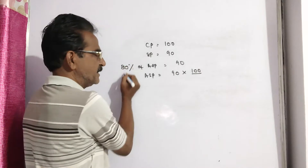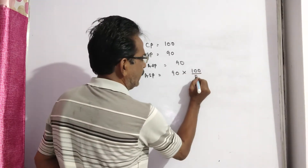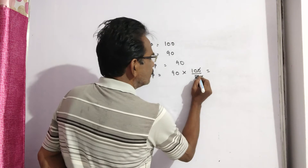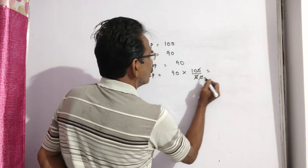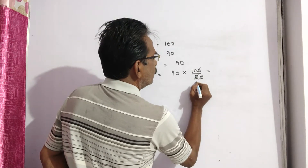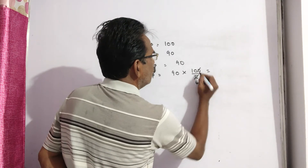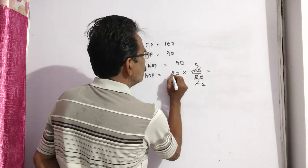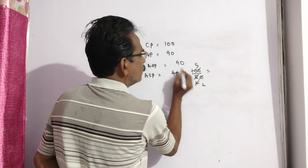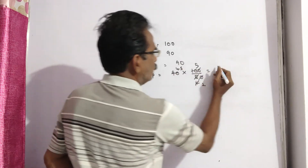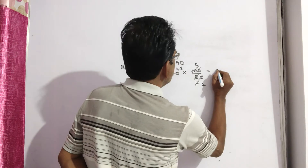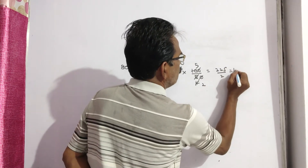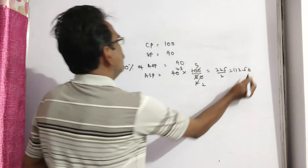80% means 80 by 100, so it becomes 100 by 80. That gives us 225 by 2, which means 112.5.